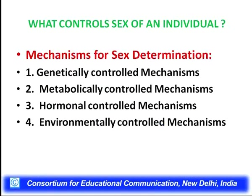What really controls the sex of an individual? The mechanism includes genetic control, which is the main control, but genetic controls do not work in complete isolation. The action of genes — their manifestation, expression, blockage, and switching — must be controlled by various metabolic factors. More importantly, hormonally controlled mechanisms trigger the genetically controlled mechanisms. And one should not forget environmentally controlled mechanisms as well.